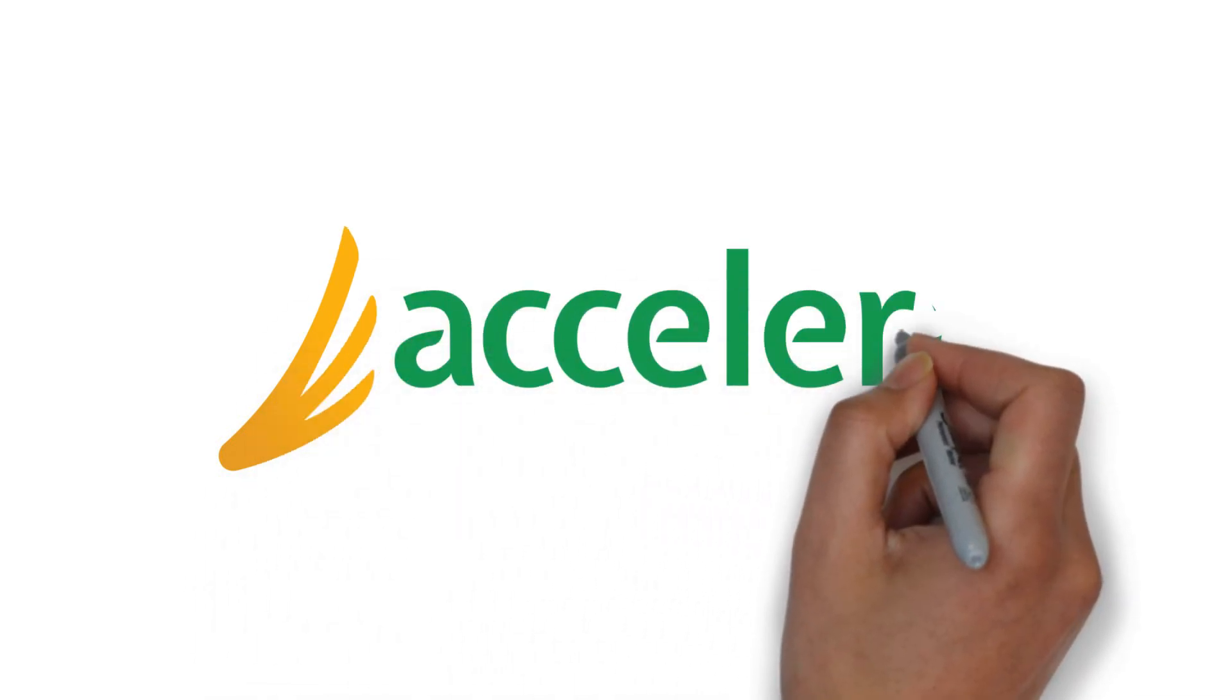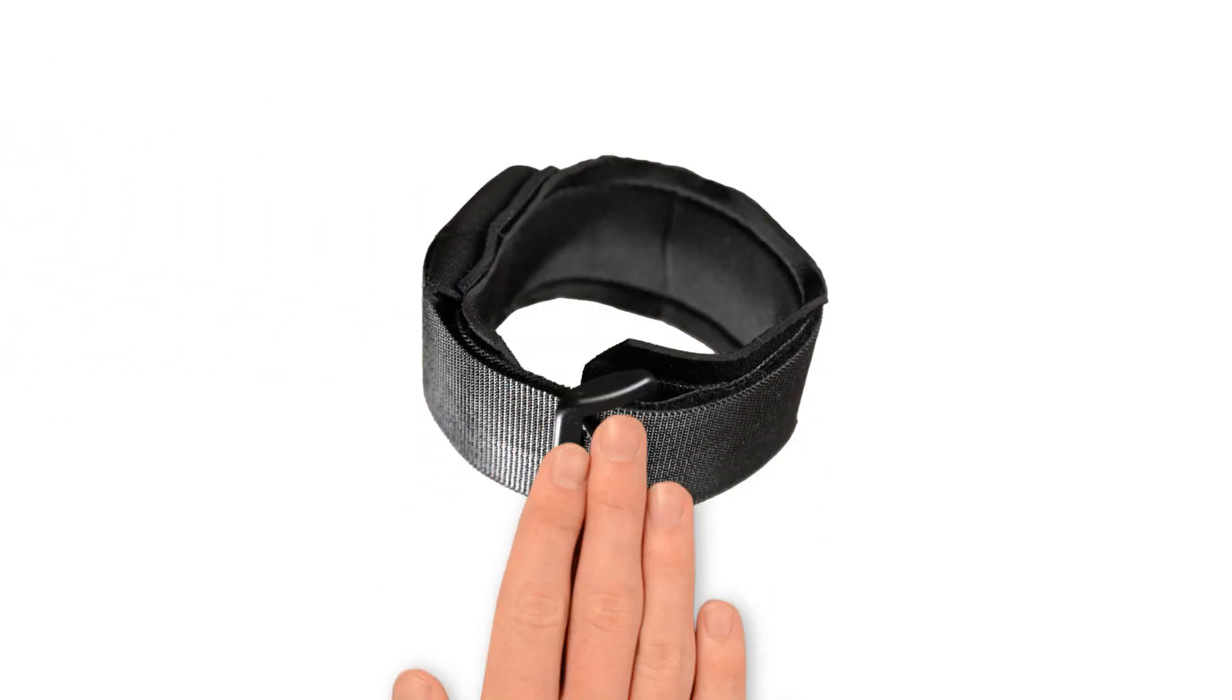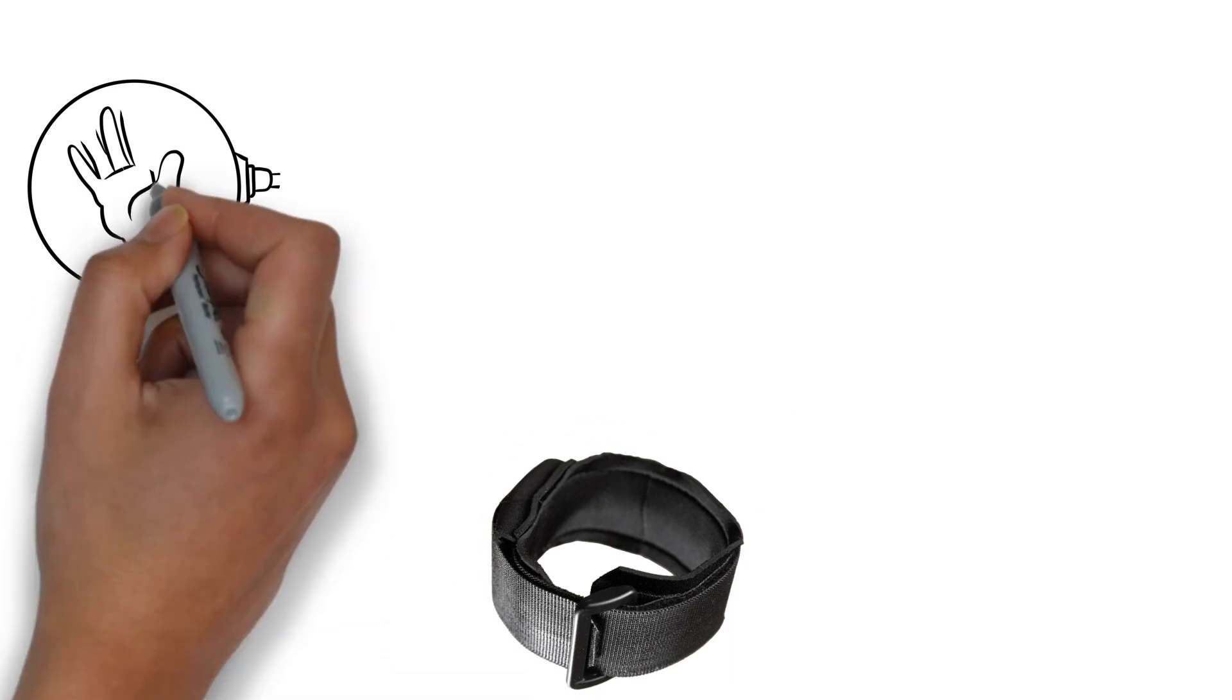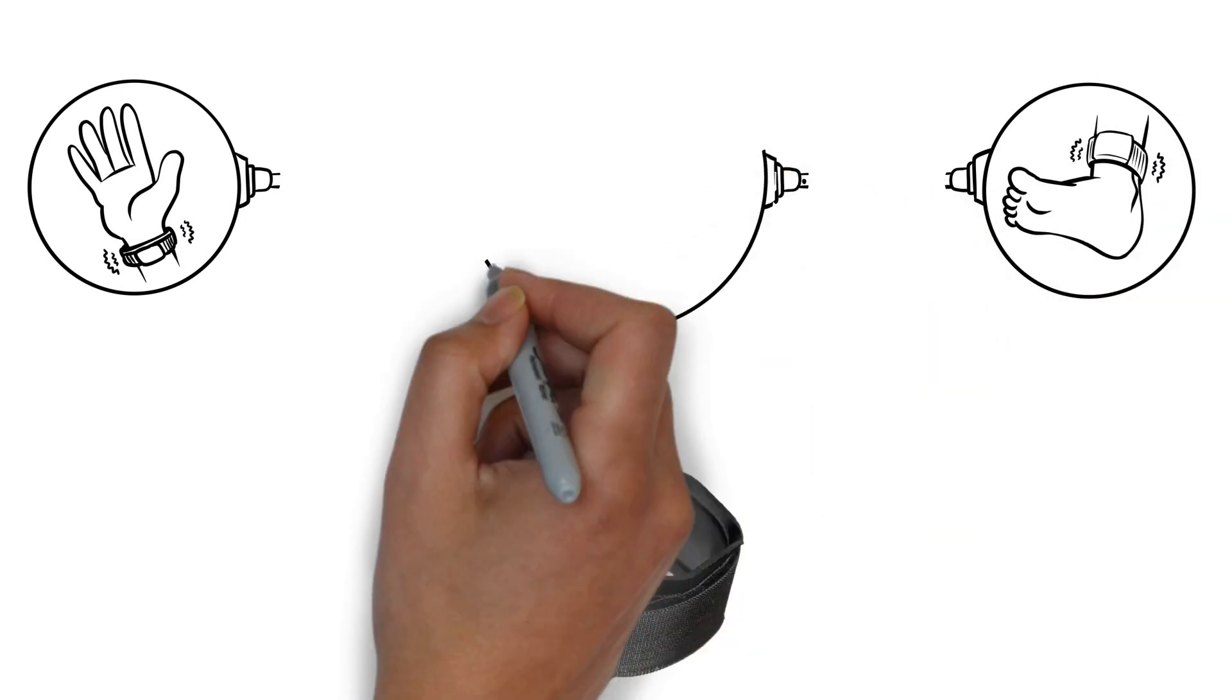Accelera's stochastic resonance can help accelerate the return to function. How does it work? The wearable band is placed on the wrist, ankle, or other body parts during daily activities and emits a vibration signal that the wearer is not even consciously aware of.